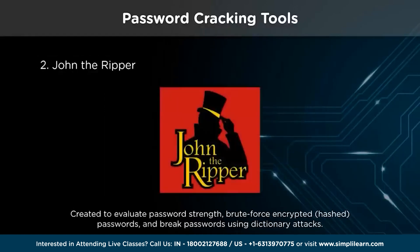John the Ripper is a password cracking application that was first released in 1996 for Unix-based computers. It was created to evaluate password strength, brute force encrypted hash passwords, and break passwords using dictionary attacks. It can use dictionary attacks, rainbow tables, and other attacks depending on the target type.